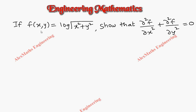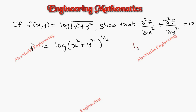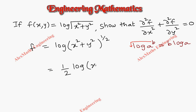Hi students, this is Alex here. In this problem we have f(x,y) = log√(x²+y²). We have to show that ∂²f/∂x² + ∂²f/∂y² = 0. Let's take the function f, which is log√(x²+y²). The square root can be written as power half, and using the log rule — log a^b = b·log a — we can write this as f = ½·log(x²+y²).